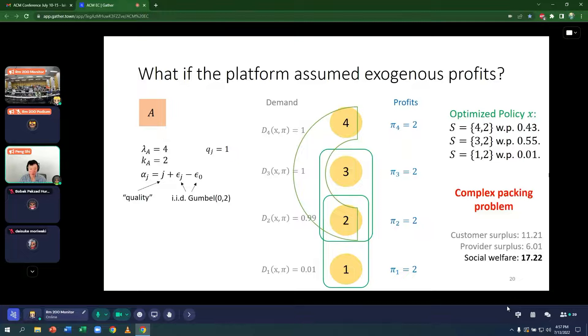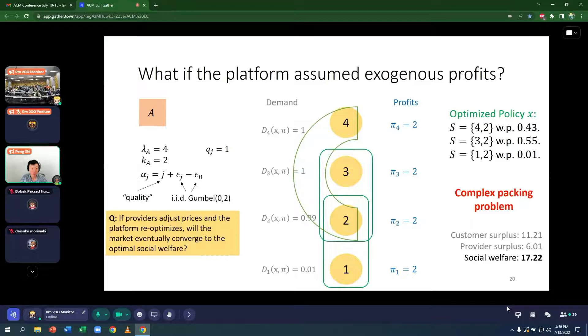And this is a complex packing problem. What do I mean by that? So provider 4 is the highest quality, but we don't recommend provider 4 always because if we recommend provider 4 too much, that provider will become unavailable very quickly because they're so popular. Whereas provider 2 is less in quality, so we can afford to recommend provider 2 more since they get filled up less. So here we want to recommend high quality providers, but we don't want to recommend them so much that they get filled. So this is what I mean by the complex packing problem.